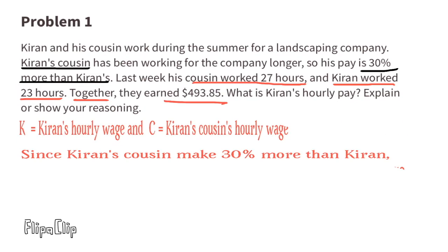We can set it up like this. Let K equal Kiran's hourly wage, and let C equal Kiran's cousin's hourly wage. Since Kiran's cousin makes 30% more than Kiran, we can write the first equation as C equals 1.3 times K.